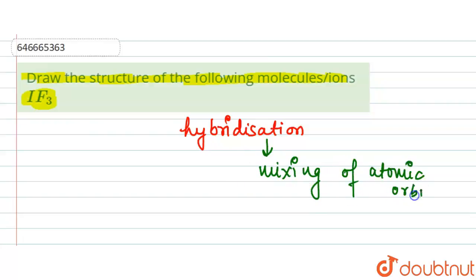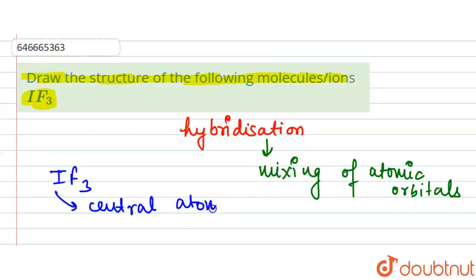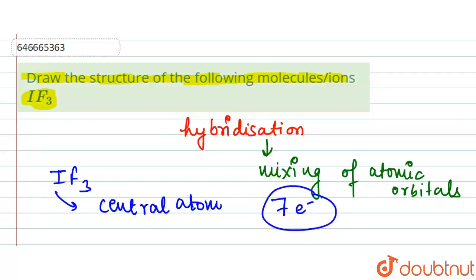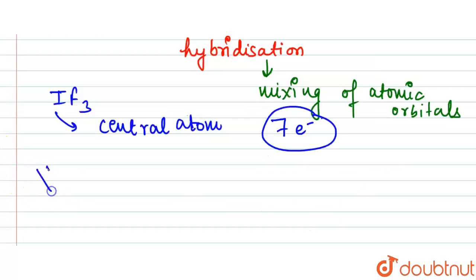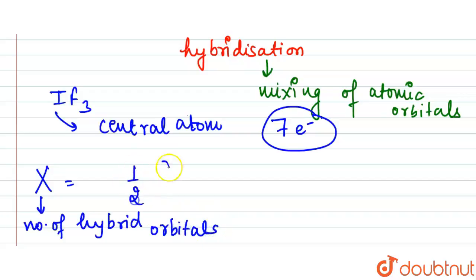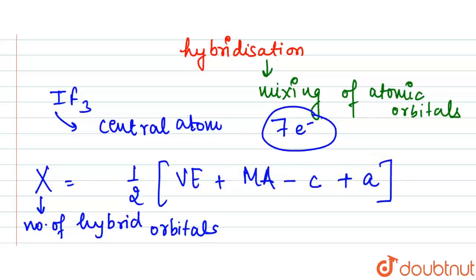In the IF₃ molecule, iodine (I) is the central atom. It belongs to the halogen family and has seven valence electrons. To find the hybridization, we use the formula: X = ½ × (valence electrons + monovalent atoms − charge on cation + charge on anion), where X is the number of hybrid orbitals.